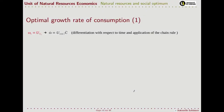Let's now analyze what happens to the dynamic of consumption — how consumption changes with time — still in the context of the optimal solution that maximizes welfare. We take back our results: the shelf price of capital must be equal to the marginal consumption. When we take the derivative of both sides with respect to time, we obtain through the chain rules the equation that you see here.